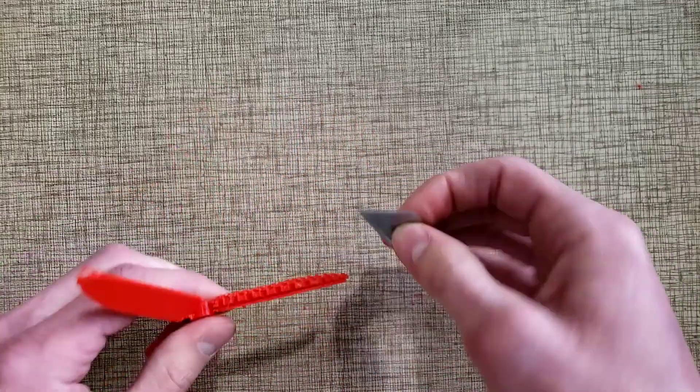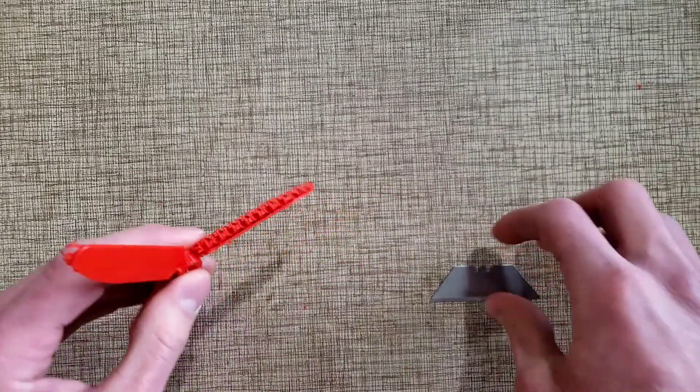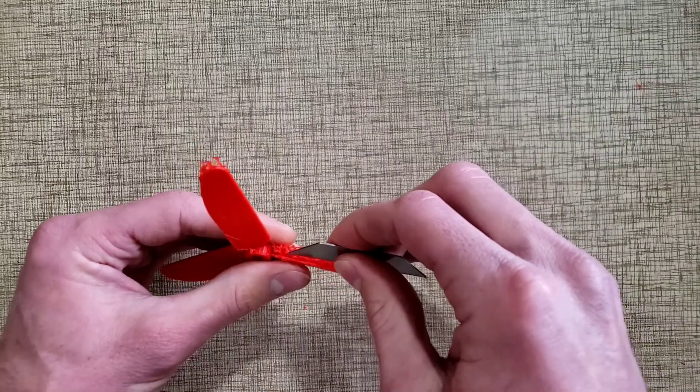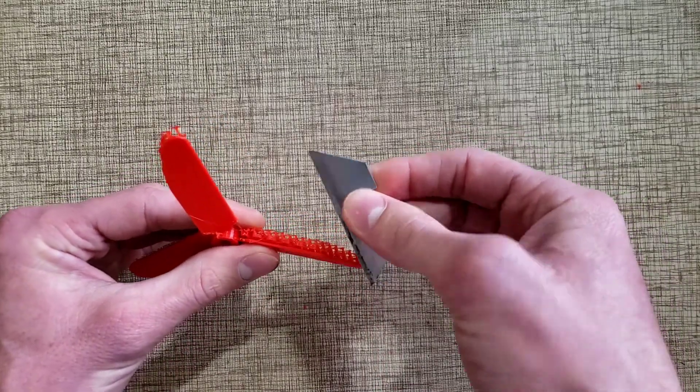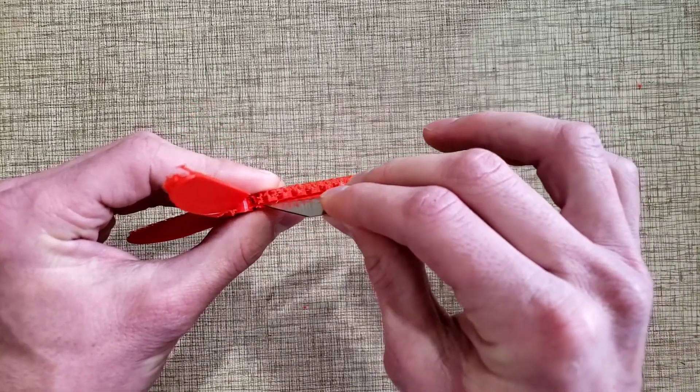It kind of just helps if you run it along there. You can see right here it's still attached pretty well. This is with PETG filament. So what you do is, once again just be really careful when you're doing this, you don't want to slip and cut yourself.